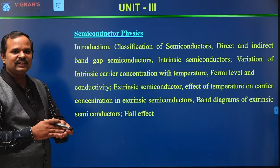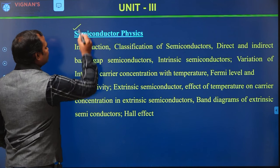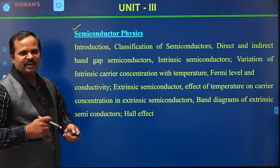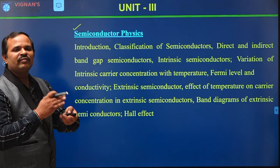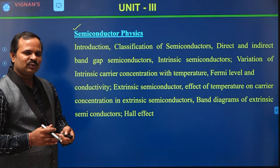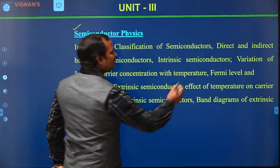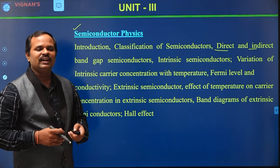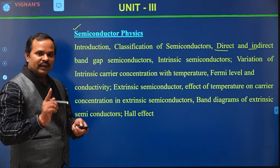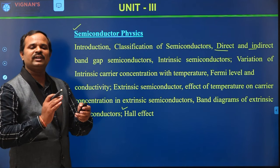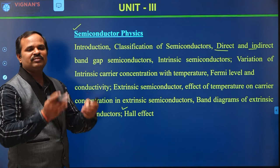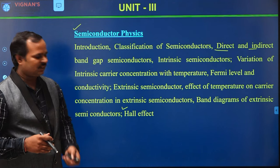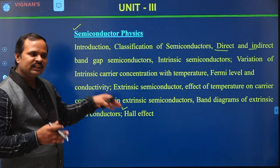In the third unit, we specially discuss semiconducting materials, including intrinsic and extrinsic semiconductors, how to compute their carrier concentration, and how they vary with temperature and Fermi energy. We also distinguish semiconductors based on their band gap — either direct or indirect band gap — which is very important in fabricating devices like LEDs and solar cells. Finally, we discuss Hall effect, which gives information about the type of carriers — n-type or p-type — and the carrier concentration.